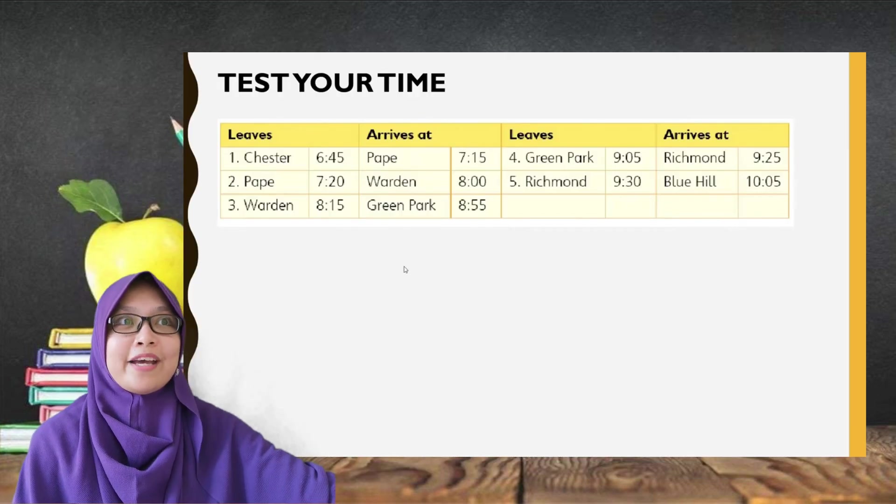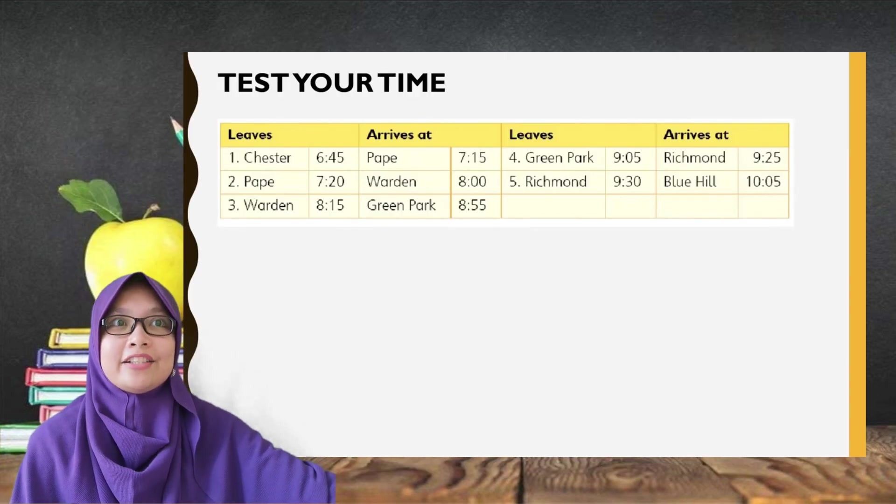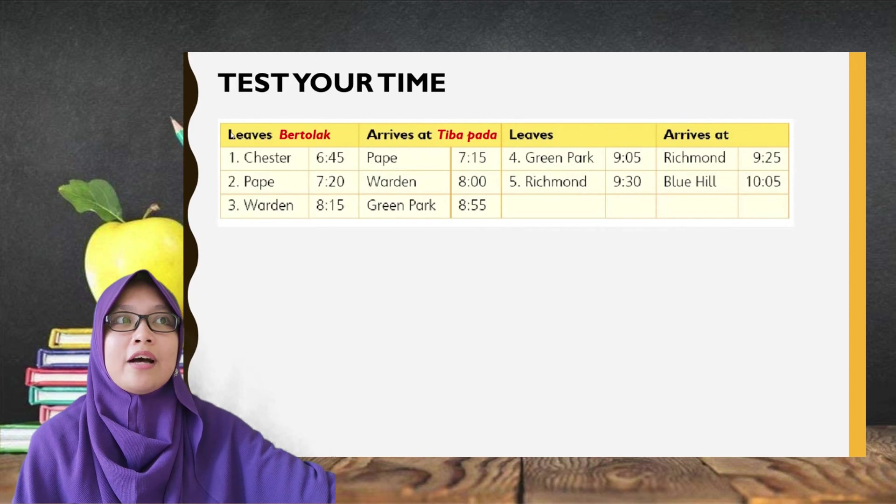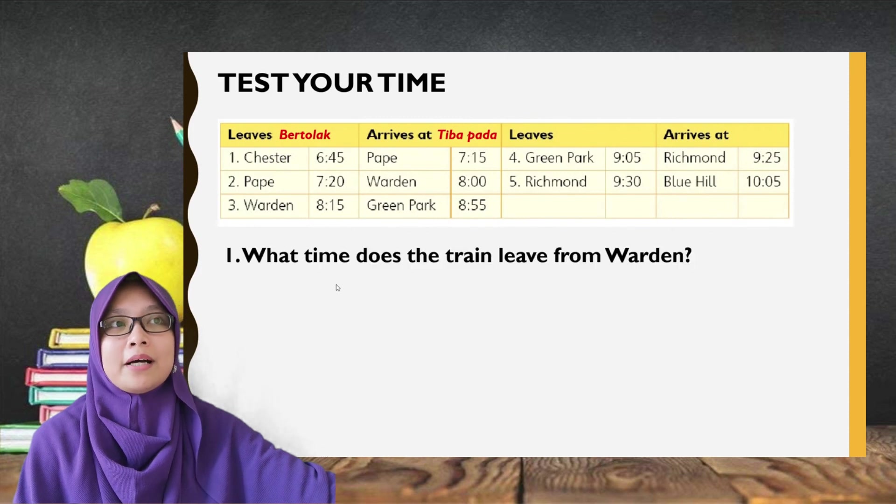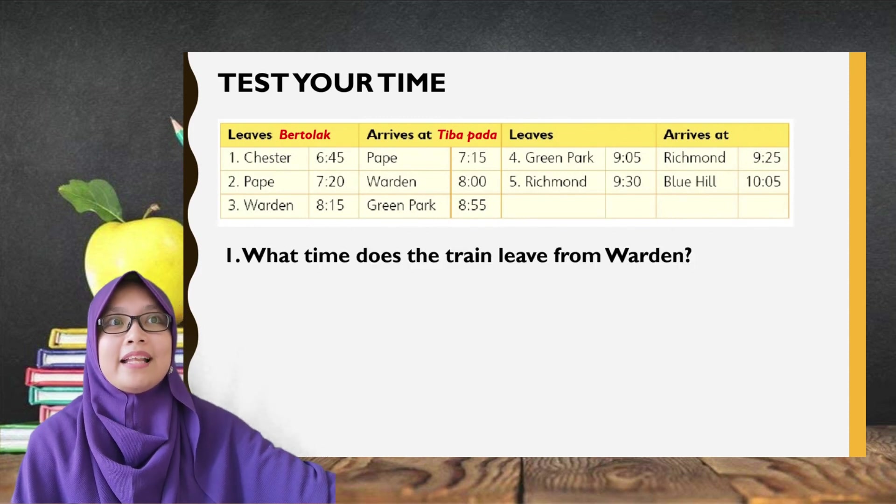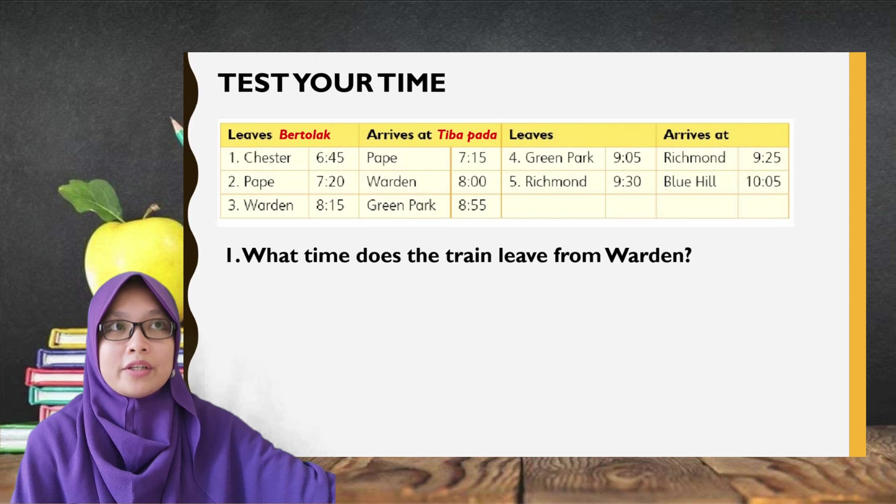Good that we have read that. Now, let's check your comprehension on how to read the time. Note that leave bermaksud bertolak. Meanwhile, arrive at bermaksud sampai atau tiba pada.